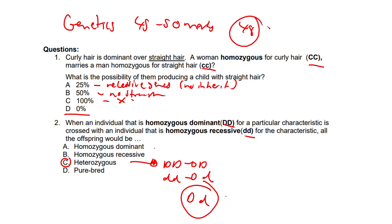Here are reasons why the other options won't work. Homozygous dominant is incorrect because the recessive allele, small d, is always inherited from the homozygous recessive parent — that rules A out. Homozygous recessive is incorrect because no offspring can inherit two recessive alleles. And option D — purebred — is incorrect because purebred implies homozygosity, either DD or dd, which is definitely not the case here.